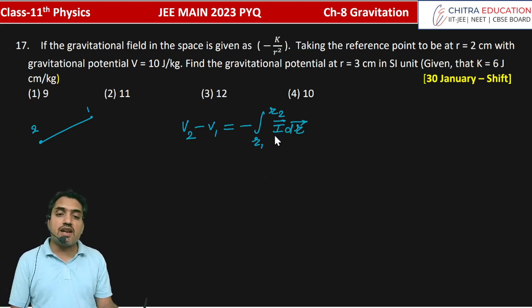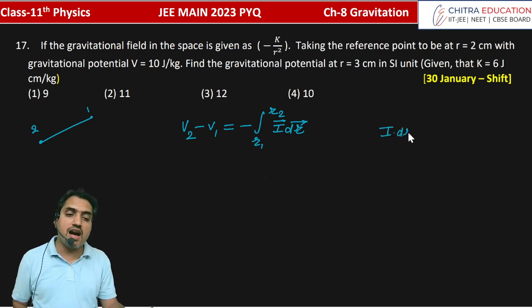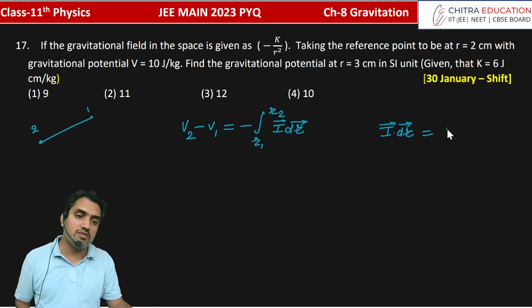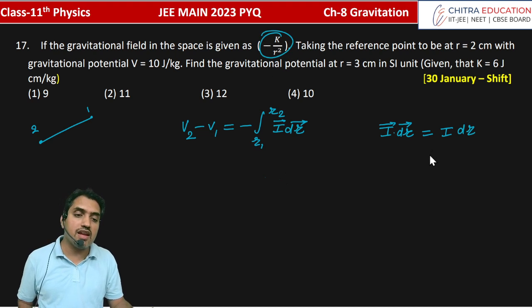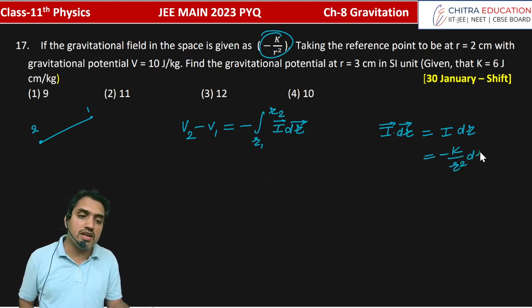Here the direction of R and dr are the same, so we can write I dot dr as I into dr because both directions are the same. I into dr, and I value here is minus K divided by R square into dr.